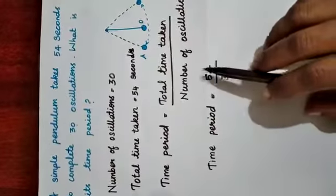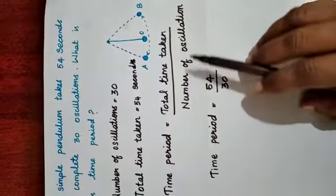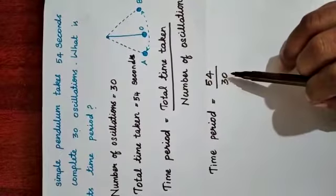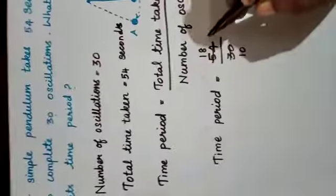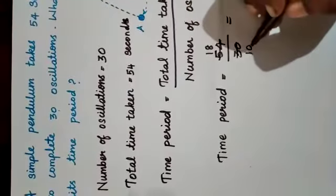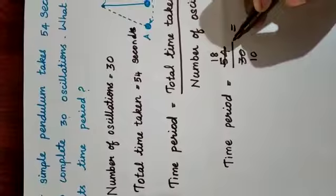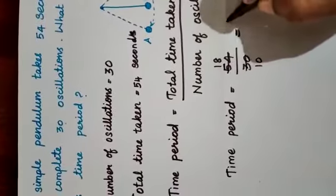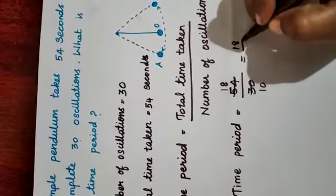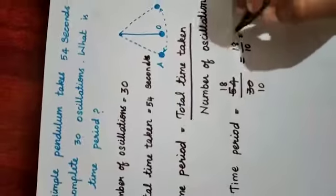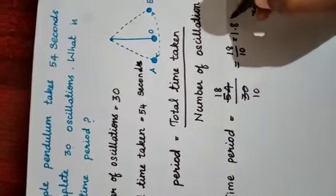Time period is equal to 54 by 30. If we apply three tables, 10 threes are 30 and 18 threes are 54. This is equal to 18 by 10 is equal to 1.8.